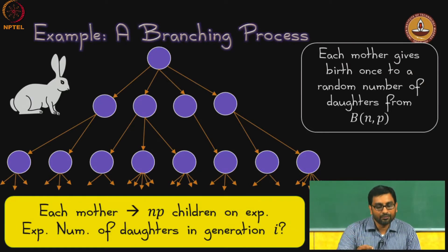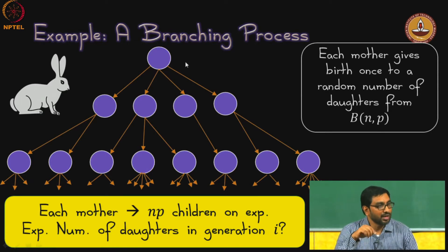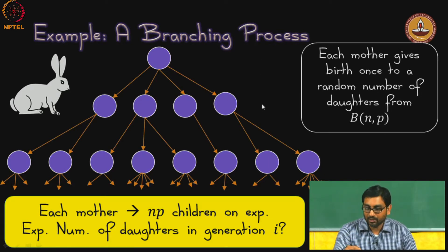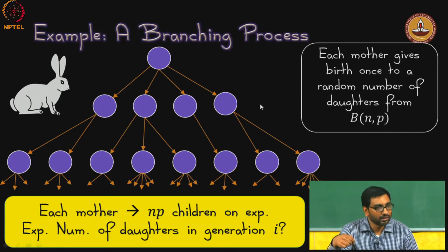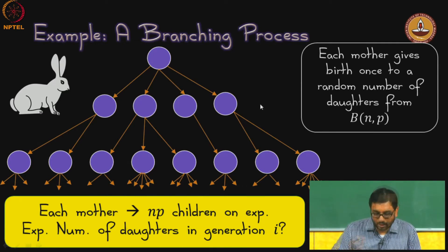If you fix a mother, the expected number of daughters is n times p — we already saw that. But what is not clear is the expected number of daughters in some generation i. In the first generation we know it, but how do we extend that to an arbitrary i-th generation? Intuitively it should be np in the first generation, np squared in the second, np cubed in the third, and so on, but the formalism we have studied so far does not guarantee that, and that is what we are going to develop.